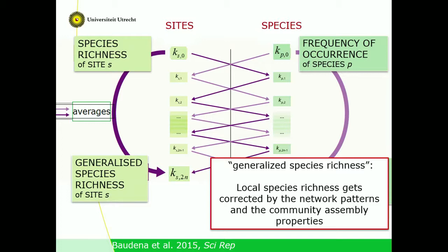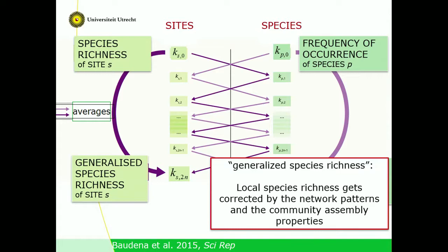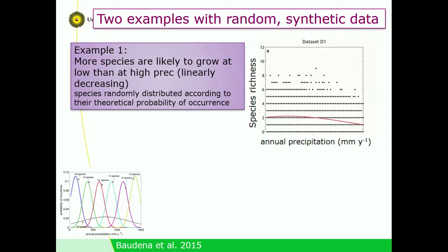A synthetic example: we distributed species along a precipitation gradient with linearly decreasing species numbers from dry to wet conditions. If you look at species richness, because of random processes, you don't see anything. But when you apply the method, a neat, clean linear decreasing pattern in generalized species richness emerges.